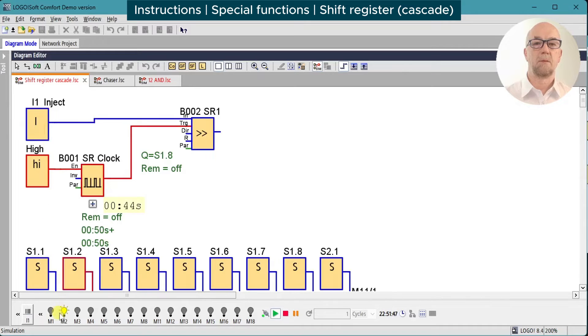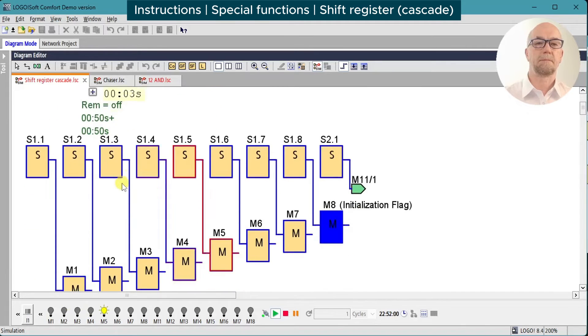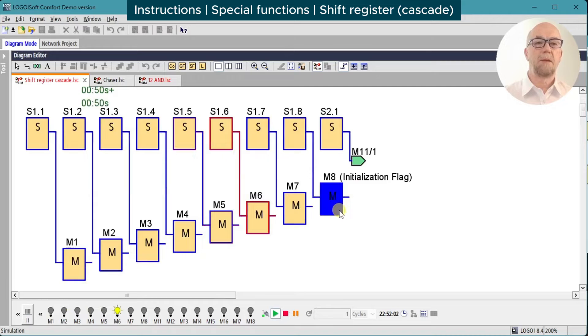So we'll turn on the inject, and we can see the bit going along here and it will go up to bit 8 and disappear. That's all fine. Don't worry about the blue color on M8 - that's the initialization flag which we're not using in our program, so we're free to use it as a regular flag.